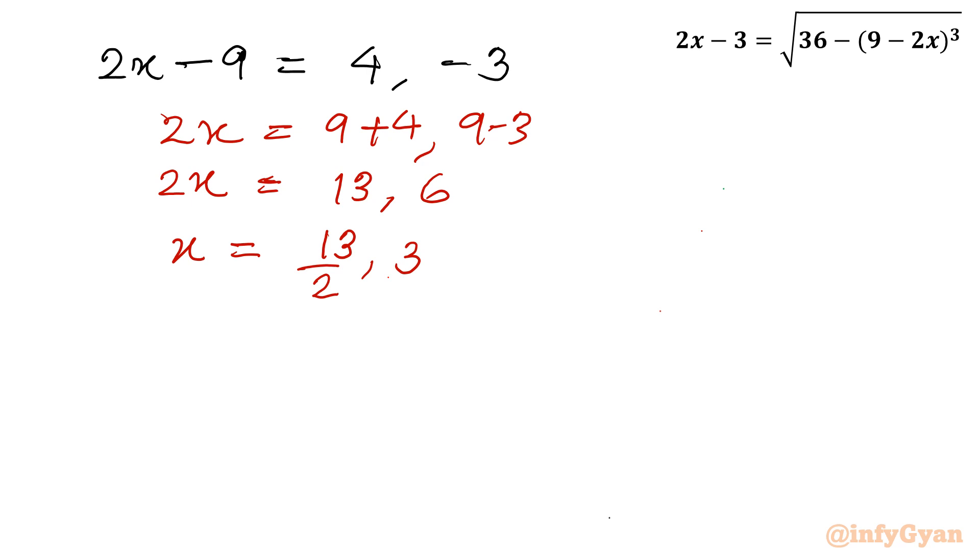Now we have to cross examine through our domain, which we calculated earlier. It was x should be greater than 2.85. You can see this is 6.5 and 3, so both values are greater than 2.85. Both solutions are accepted solutions.